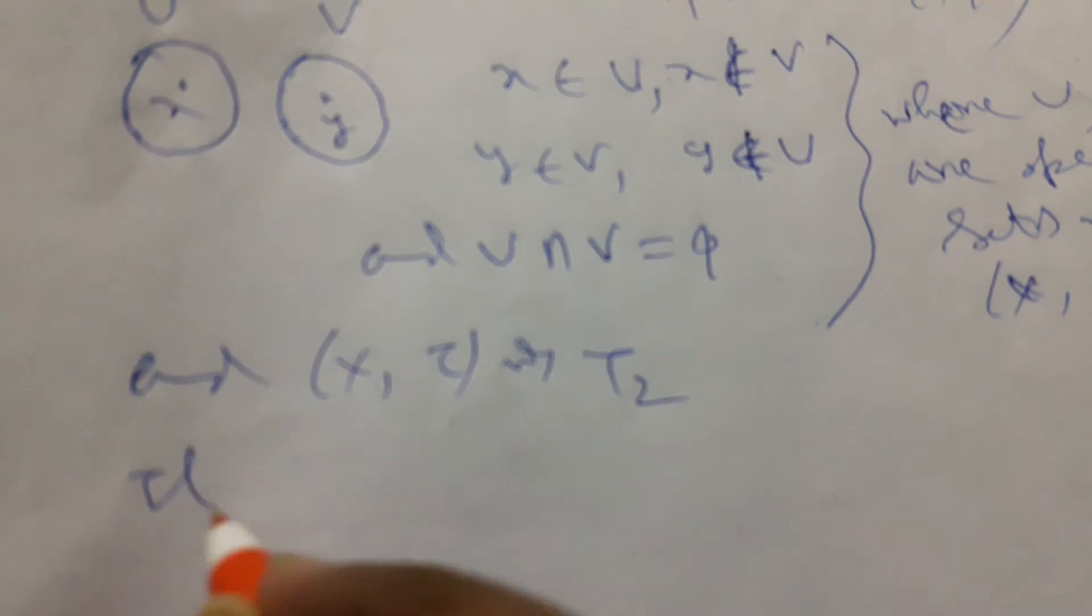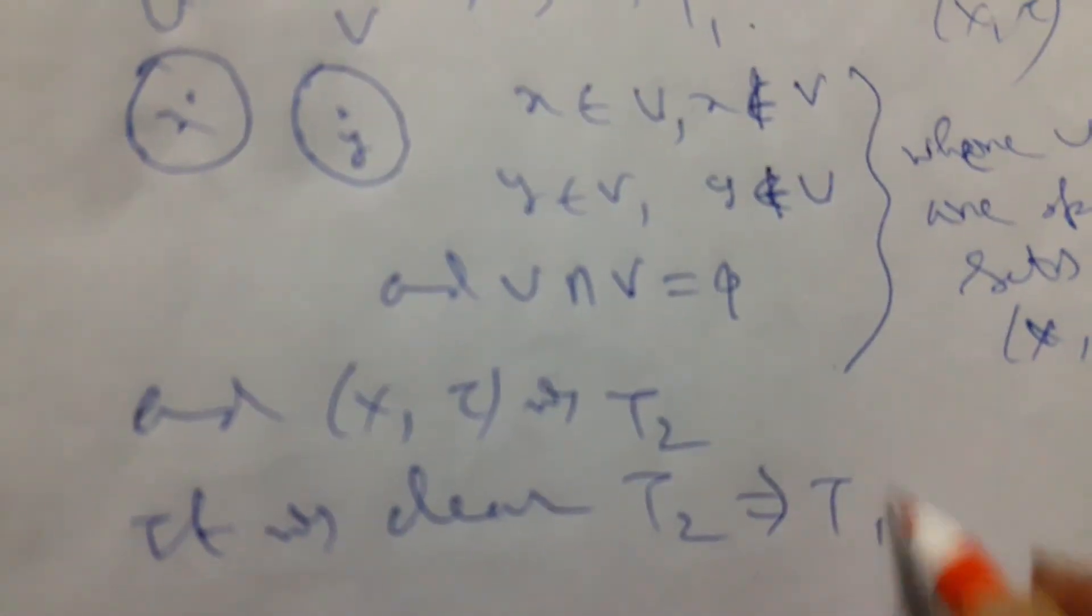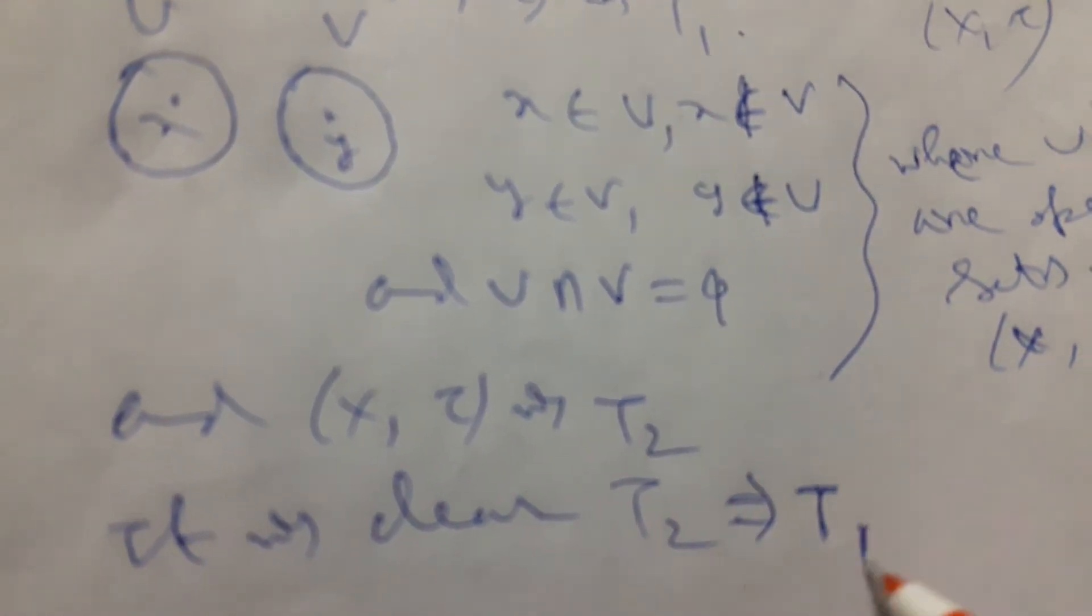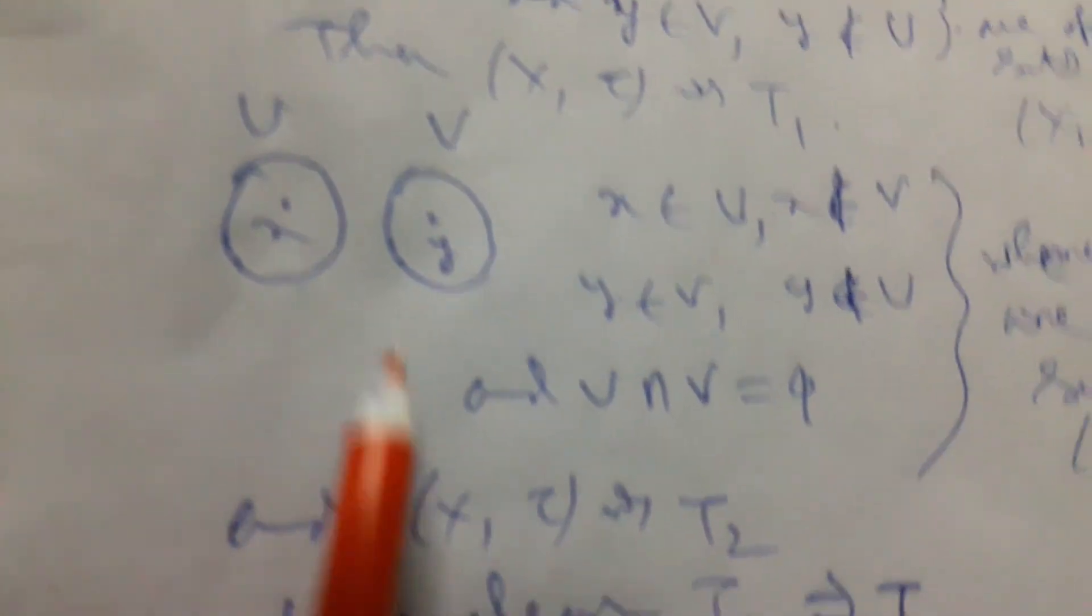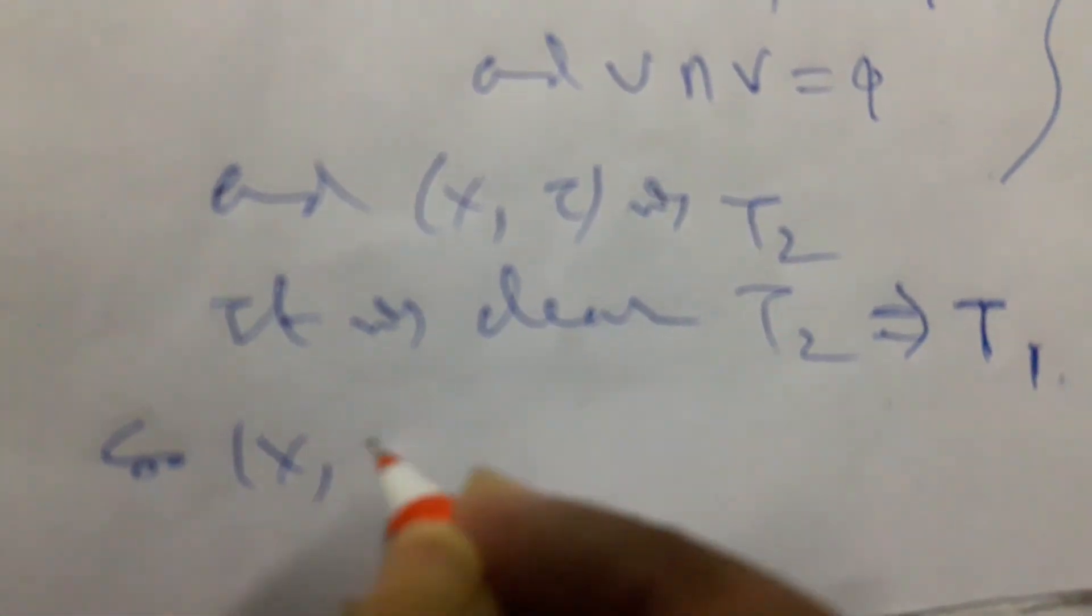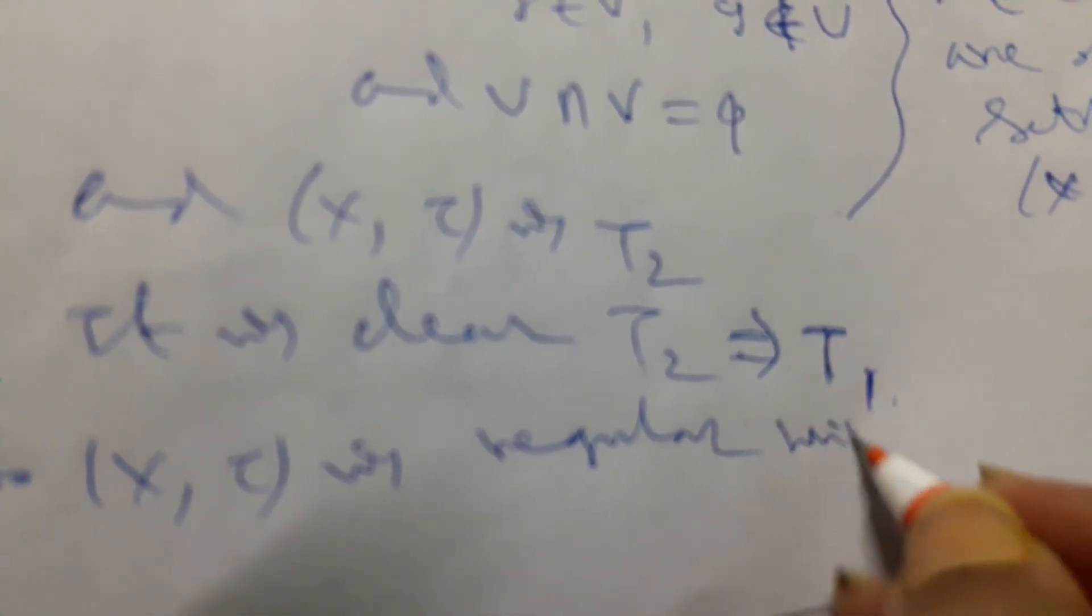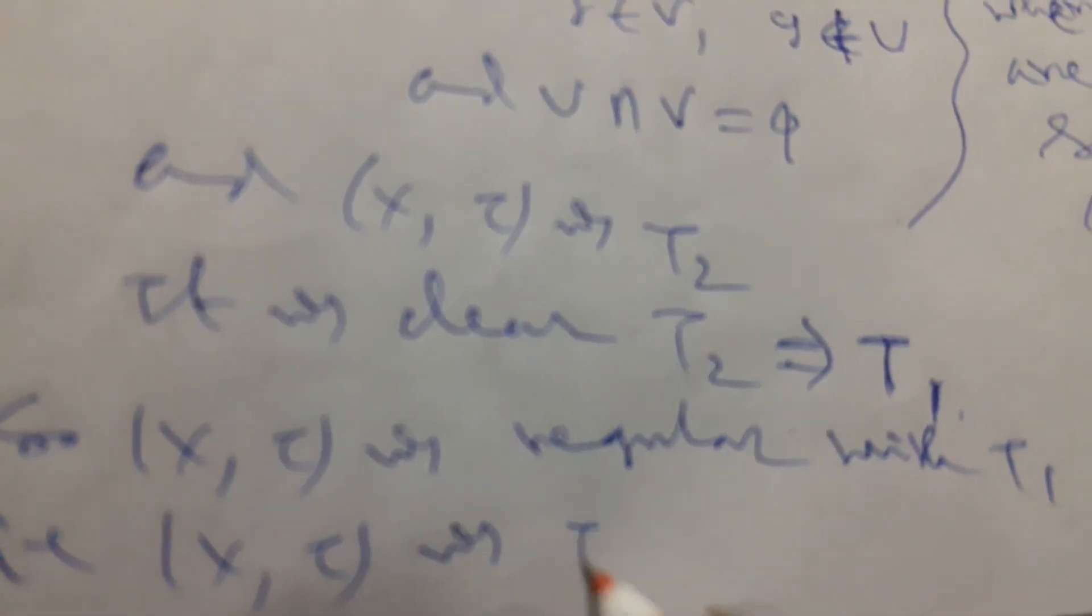Here, that T2 imply T1. So we can say it also T1, in this way. Here is a general definition criteria of T1, but it is a Hausdorff property, that the space is T2, and T2 imply T1. That's why it is T1 space. So any regular space with T1, that is x tau is regular with T1, that is x tau is T3 space.